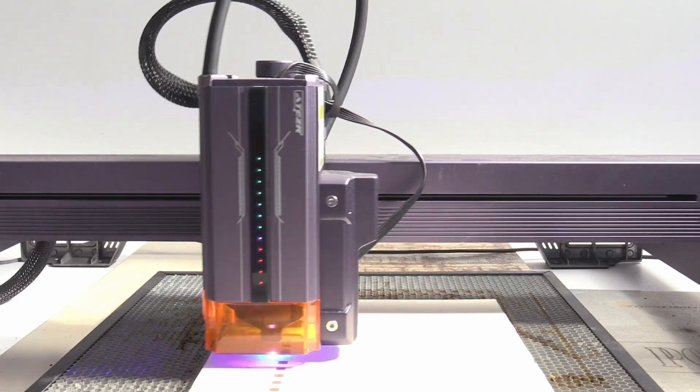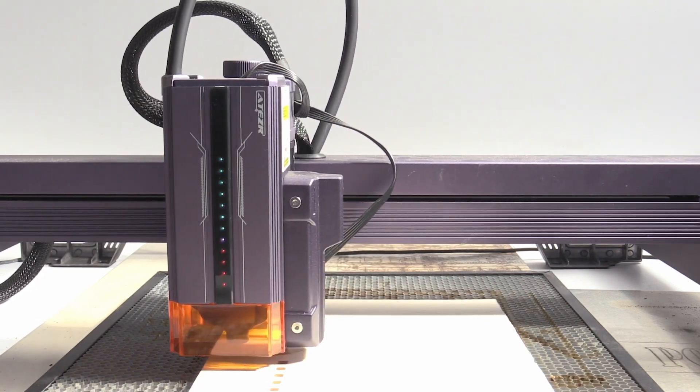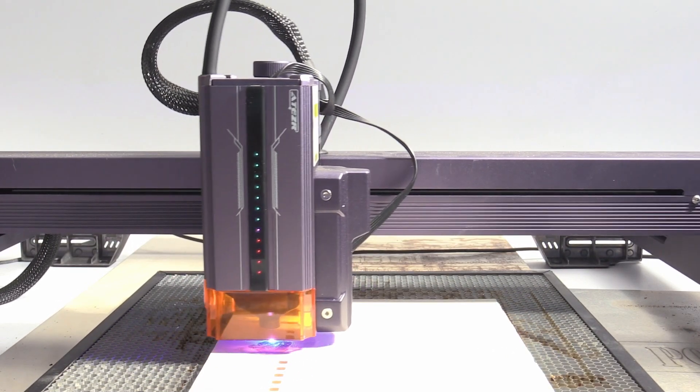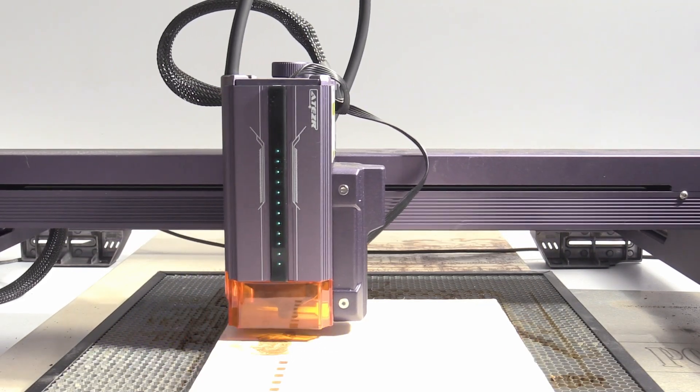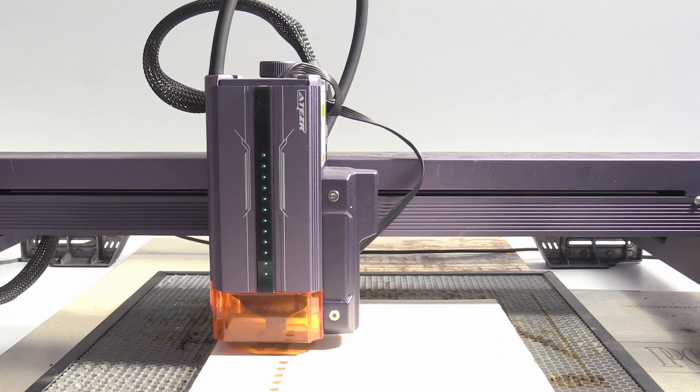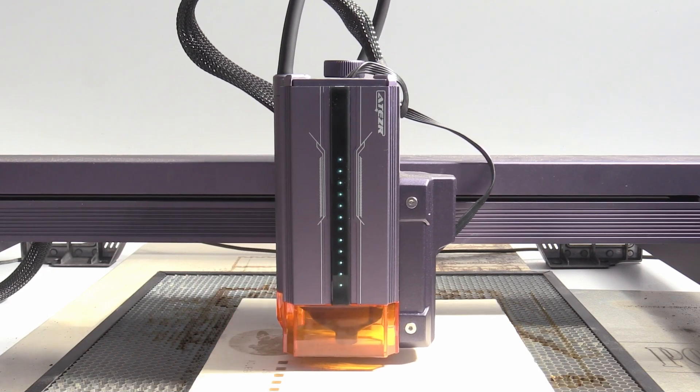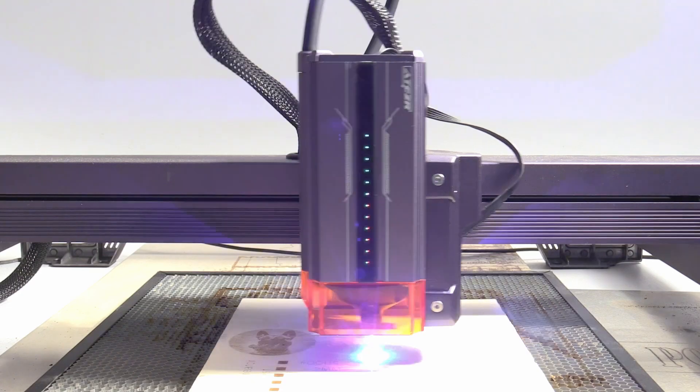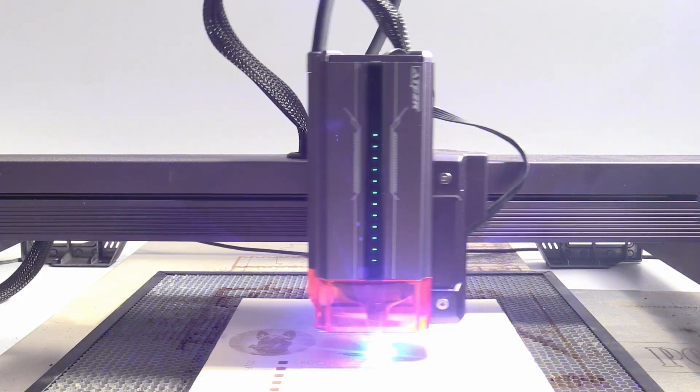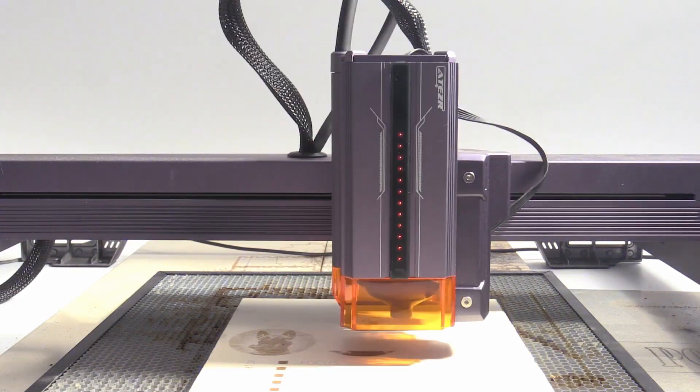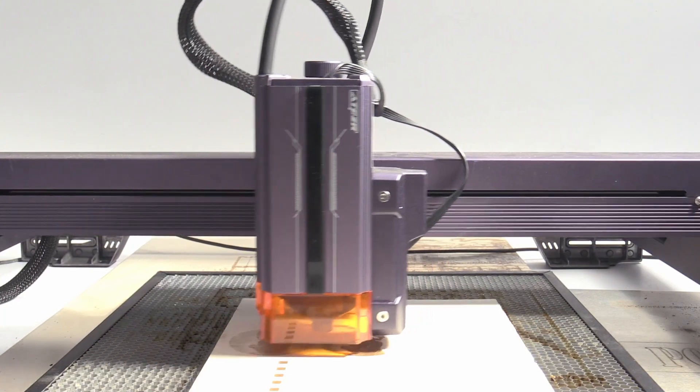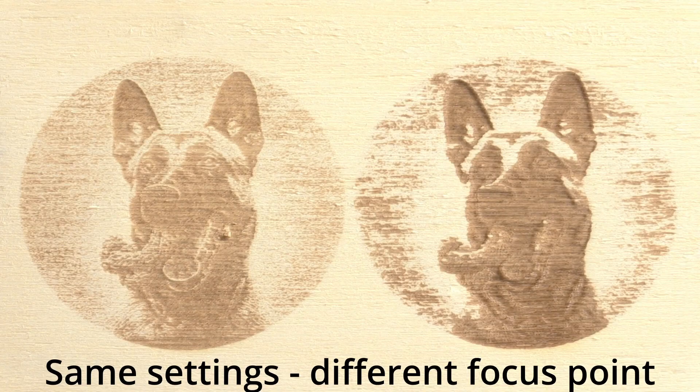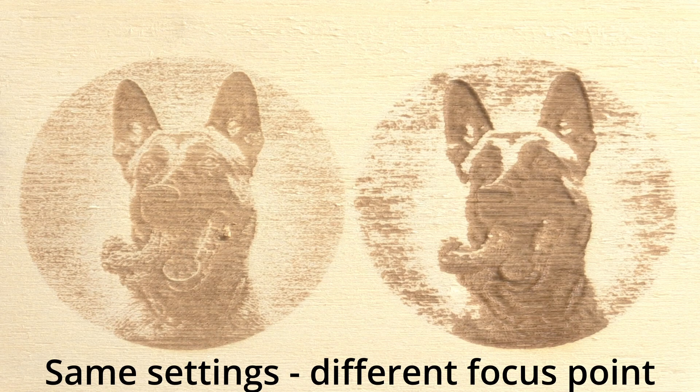For example, when a laser is in its perfect focus distance, it makes a sharp grayish line that cuts pretty deep. While when the laser is positioned, for example, 10 or even 20 mm away from the focal point, the engraving will be less sharp but it will look way darker. This adds controllability of your engraving, which I have never seen before on any other laser engraver.